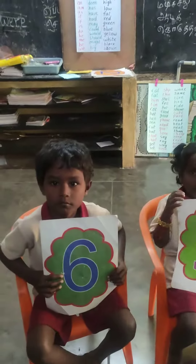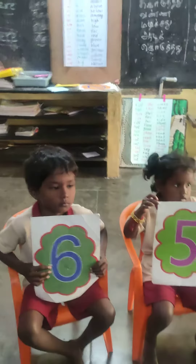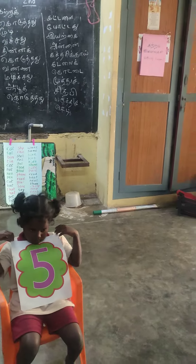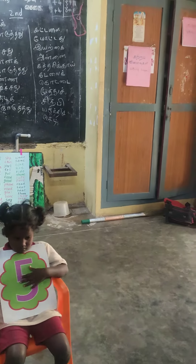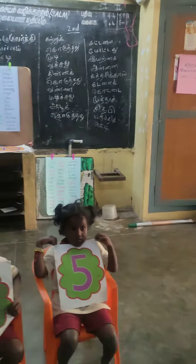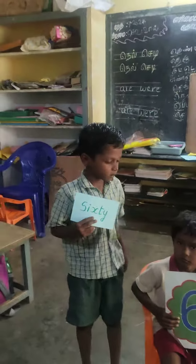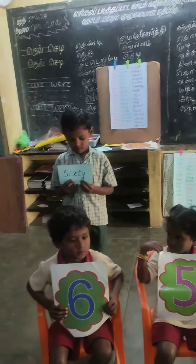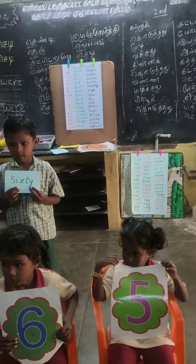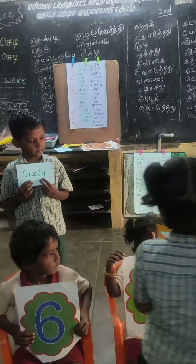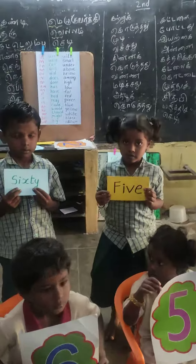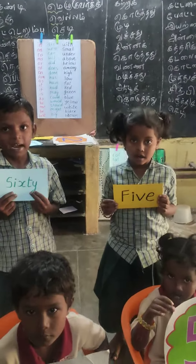Now, what number is 65? 65. 65 — you're all about to see. 60. 60. 50. How do you say 65? 65. 5. 5. How do you say 65? 65. 65. Right.